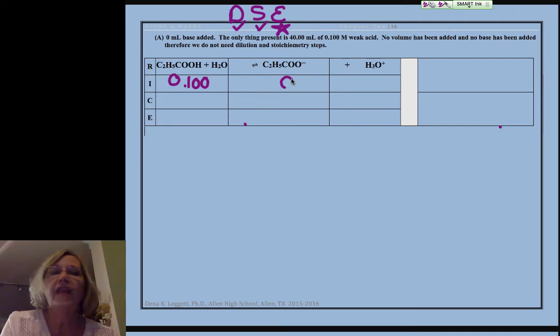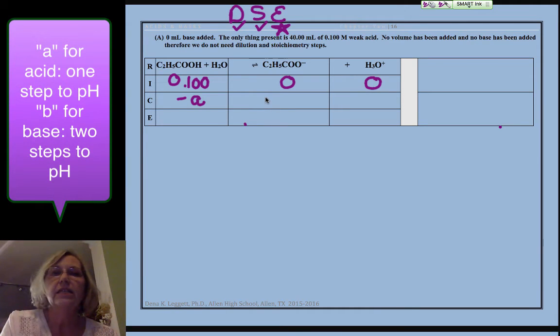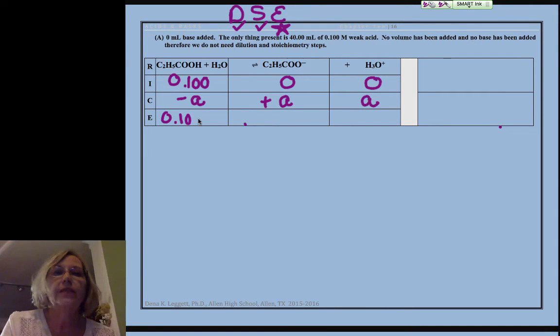My acid is 0.100. I don't have any other source of my conjugate, no H+. I like to use a for acid because it's one step to pH once I've solved for a. This is technically 0.10 minus a, but a is so small we're going to call that approximately 0.10.